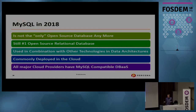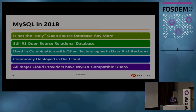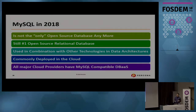MySQL is still number one in open source relational databases, and it really shows how you can use it successfully with other database technologies as part of your data layer. At any large-scale technology company these days, you typically don't find MySQL alone — it's most commonly used alongside Redis or Memcache for caching, Elasticsearch for full-text search, Hadoop for big data analysis, and Kafka for replication. MySQL takes a very important place within a portfolio of multiple technologies in the modern open source data stack.